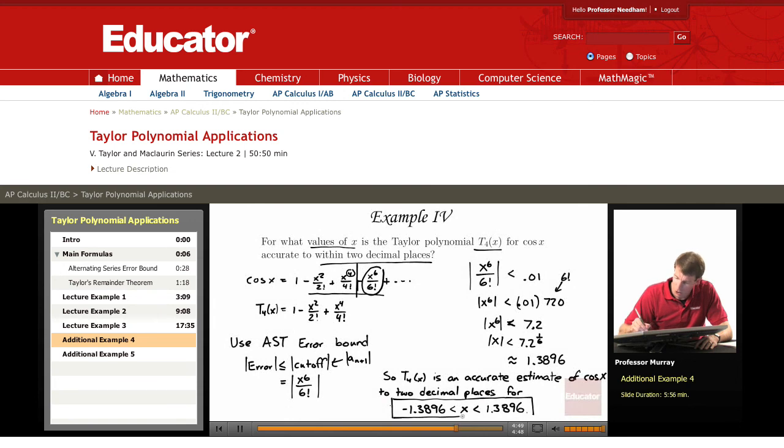For values of x, whose absolute value is less than 1.3896. We can plug those values of x into the Taylor polynomial, the fourth degree Taylor polynomial. And what we'll get is answers that are close to cosine x to an error tolerance of .01.